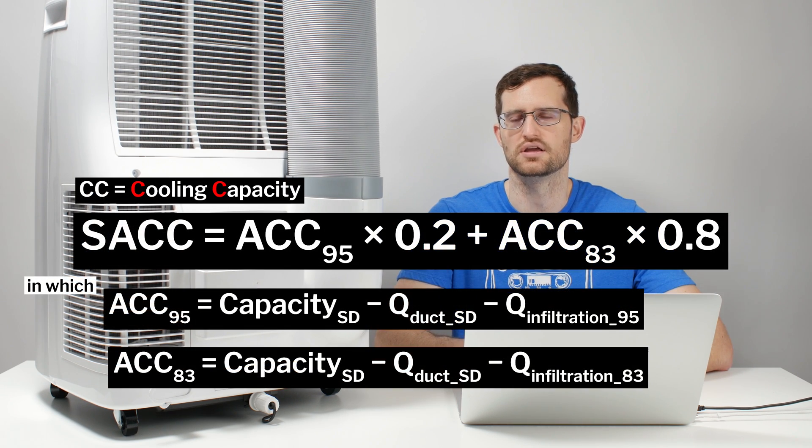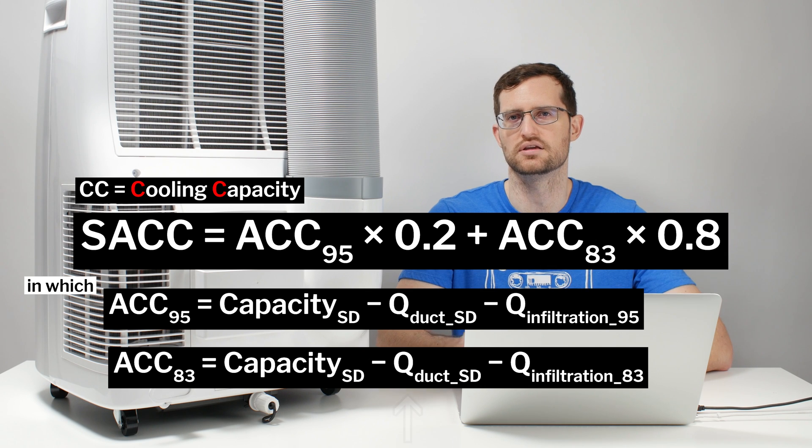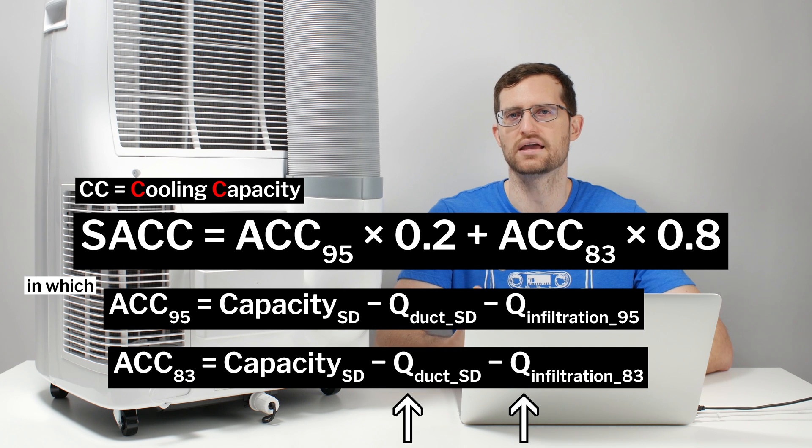Now, in recent times, we have new standards for measuring BTUs and that new standard is called seasonally adjusted cooling capacity. And using seasonally adjusted cooling capacity, we can now see the true cooling capacity of these units because seasonally adjusted cooling capacity, SACC for short, actually subtracts the heat added by the ducting and the heat added by infiltration air from the overall BTU number to give us a more accurate BTU number that we can use to compare different units.